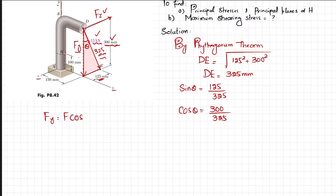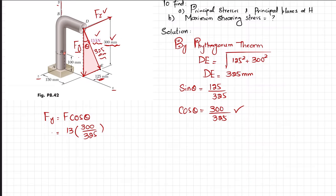Fy equals F·cos(theta), so Fy equals 13 kilonewtons times 300 over 325. Since the force acts downward (negative y-direction), Fy equals minus 12 kilonewtons.